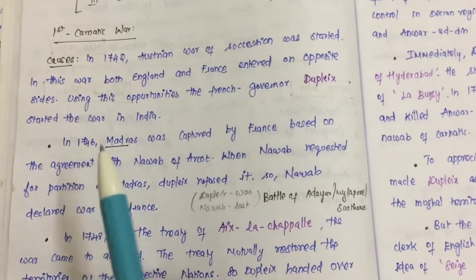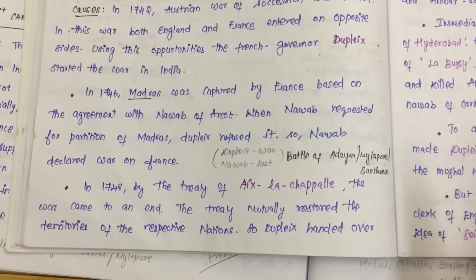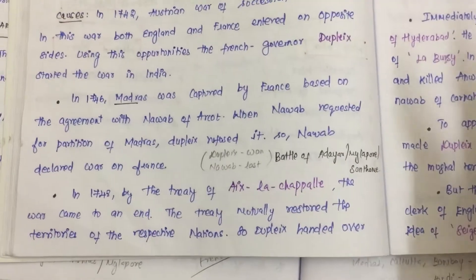In 1746, the French captured Madras. The war of death was after the war of Austrian Succession.